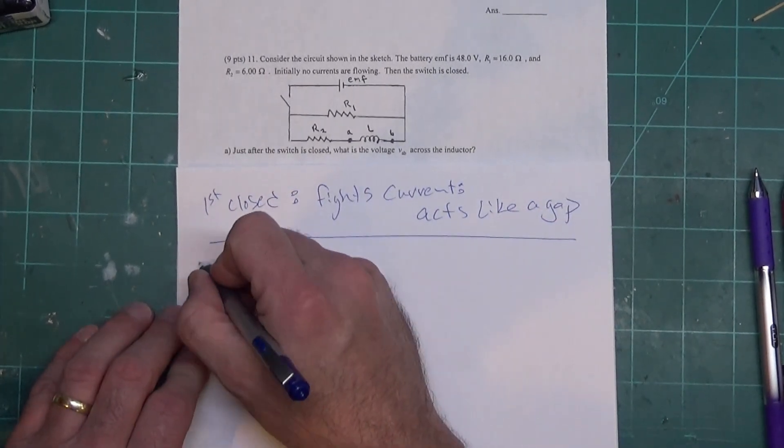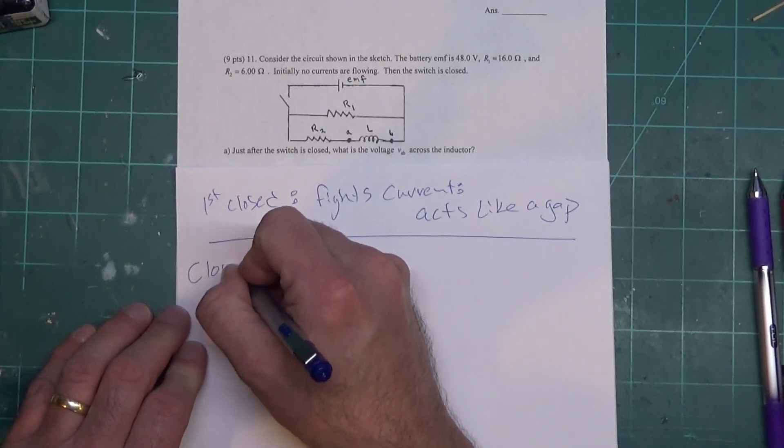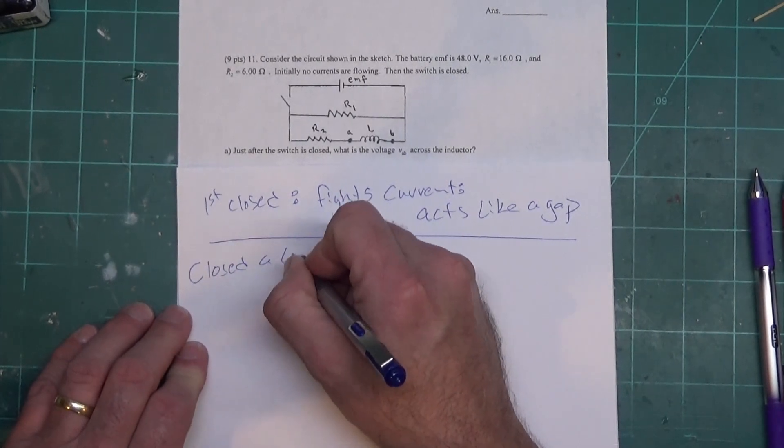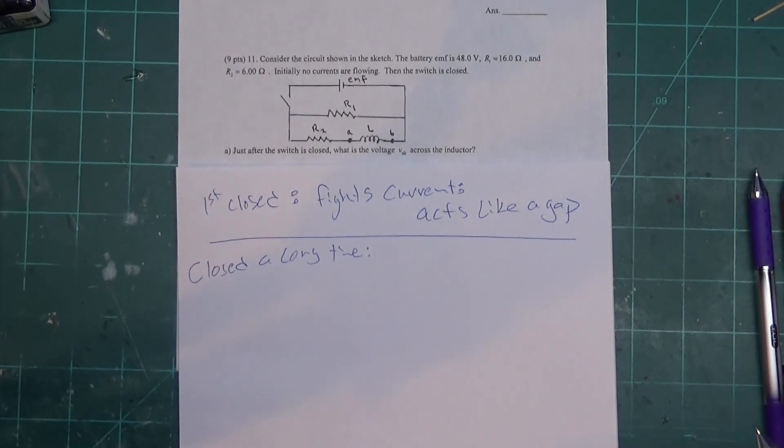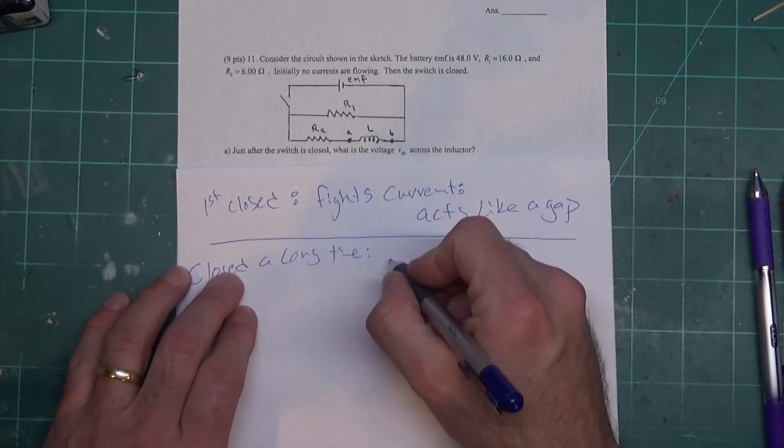Now when the switch has been closed a long time, it's already built up its energy in the magnetic field so it's just happily sitting there and it acts like a wire, just letting the current pass right on through.